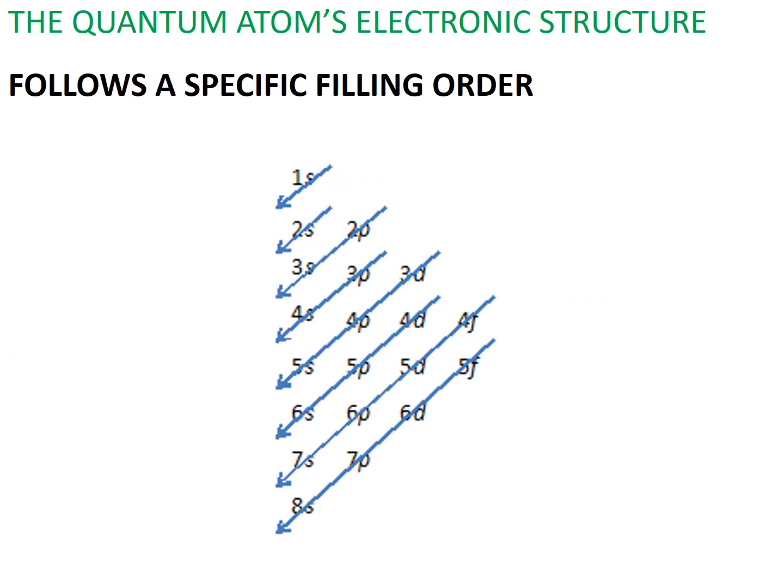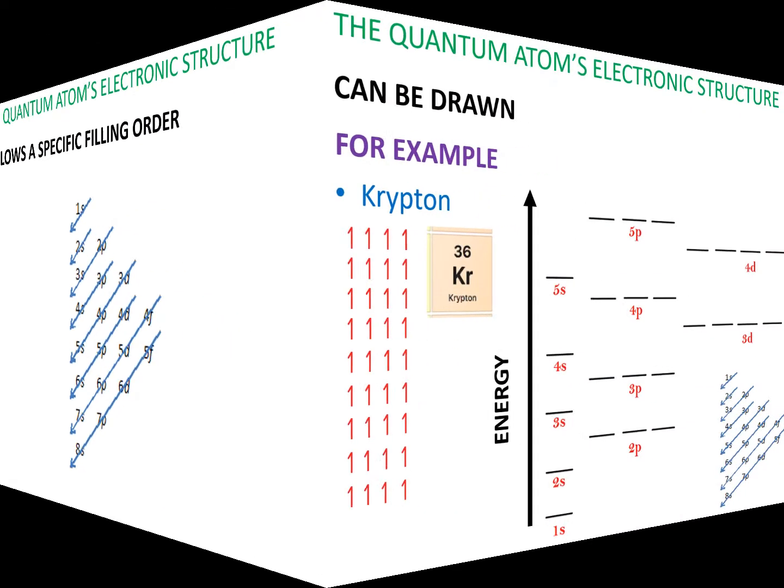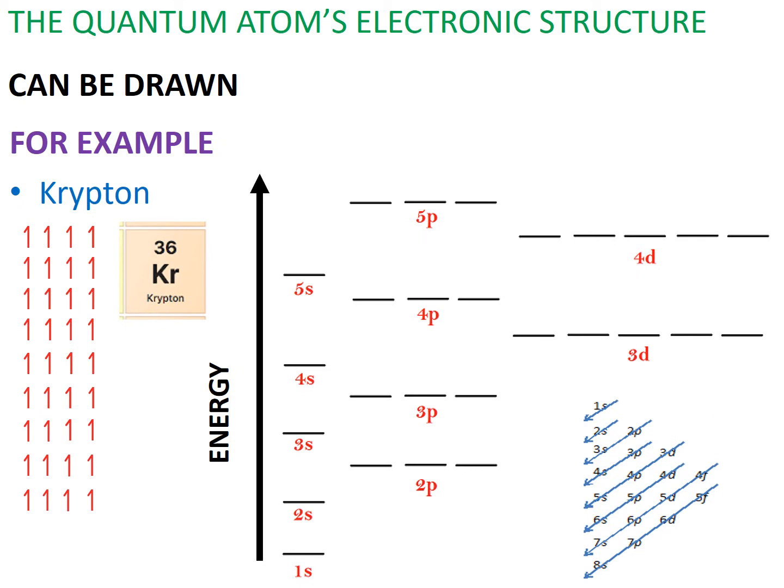Now let's return to Krypton and use our electron filling chart to see how these three rules work. According to rule number one, we have to fill the lowest energy level first. According to this diagram, it is 1s. And according to rule number two, 1s can only hold a maximum of two electrons. Making sure one electron is spinning up, while the other electron is spinning down.